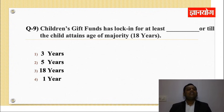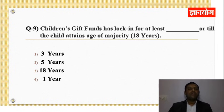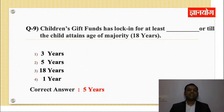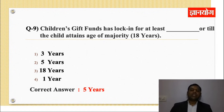Question No.9: Children's gift funds have a lock-in for at least how many years or till the child attains age of majority? Options: 3 years, 5 years, 18 years, 1 year. Correct answer: 5 years। Children's gift fund भी solution oriented category में आता है। Confusion न हो — 18 years (age of majority) का option misleading है। Retirement savings और children's gift दोनों के लिए minimum 5 year lock-in period है।